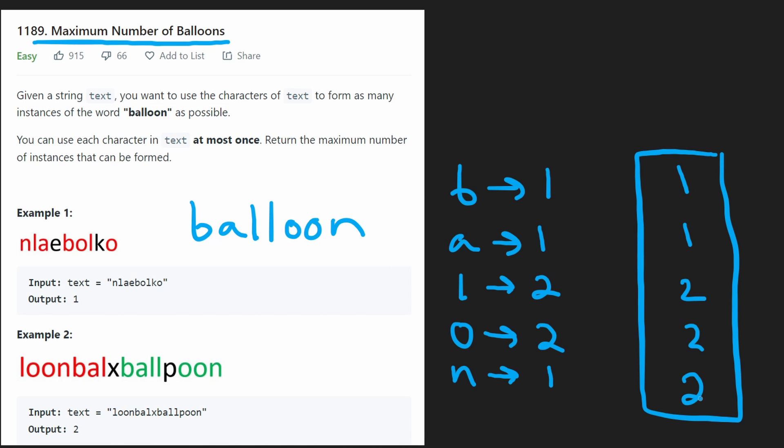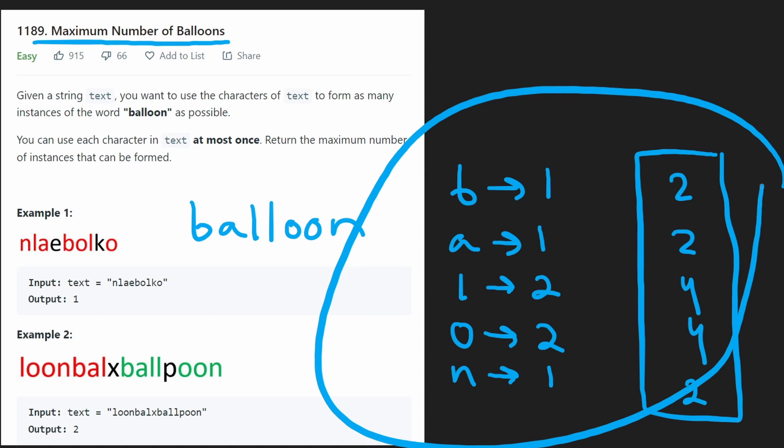Now, if we had two N's, we still have just enough to create the word a single time because we're limited by the other characters. But if we had twice as many as we needed for each of these, if we had two, two, four, four, two, then we could create the word two times.